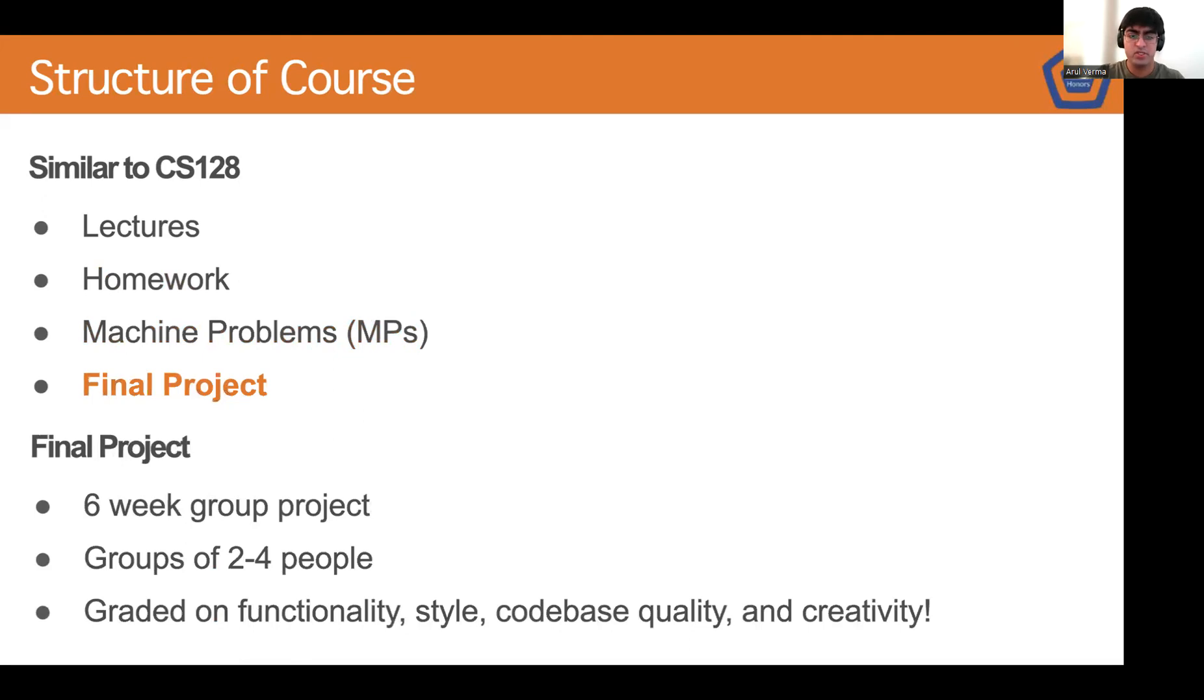The final part of our course is the final project. This is a six to eight week long group project done in groups of two to four people of your own choice. We grade primarily on functionality, style, codebase quality, and creativity. Some of the best projects are also featured on our website in our Hall of Fame. So if you've done something truly exceptional, it'll be displayed for everyone to see on our website, and any potential employer or any potential interest can be referenced to our website to display your project and its full codebase and its full display.